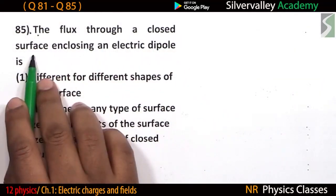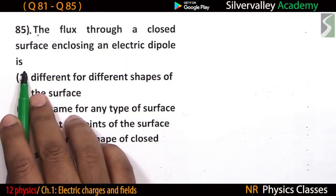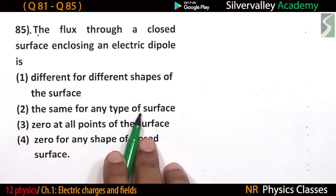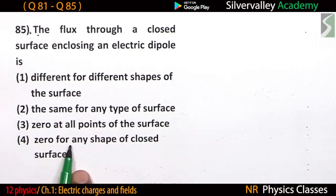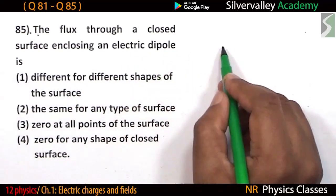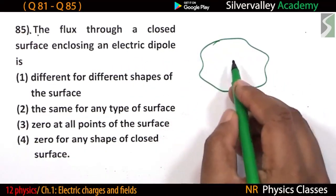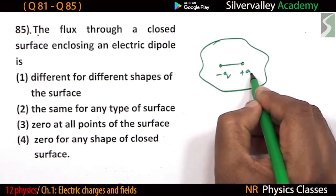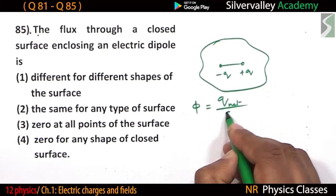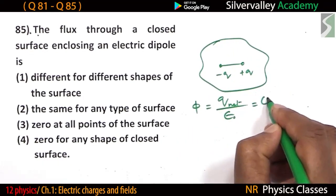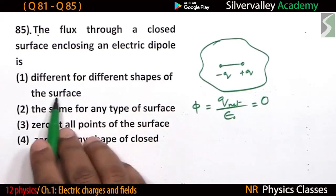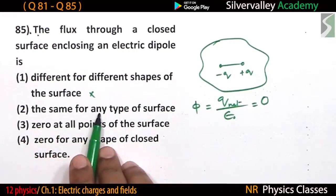The flux through a closed surface enclosing an electric dipole: options are different for different shapes, same for all types, zero at all points on the surface, or zero for any shape of closed surface. By Gauss's law, flux equals net charge divided by epsilon naught. The net charge of a dipole is zero, so flux is zero. Different for different shapes? No — same for any type of surface.